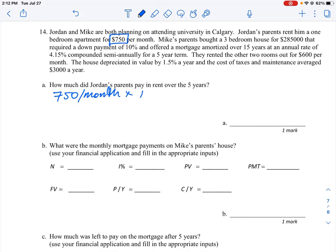You're going to be renting this for 12 months, because there are 12 months in a year, and then you're going to times this by five years. So this person Jordan is going to pay out $45,000 in rent for the course of five years. That's the answer to that question.